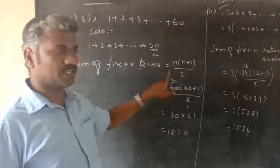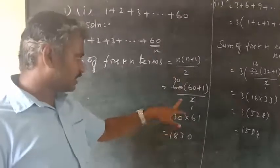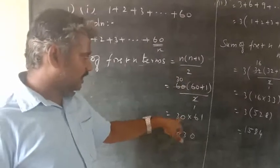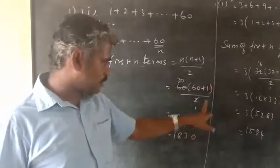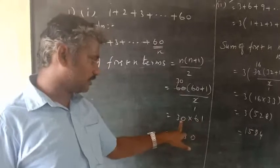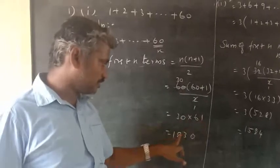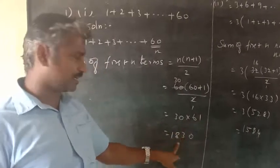2 is 2, so 60 divided by 2 is 30. 60 plus 1 is 61. So 30 into 61 equals 1830.